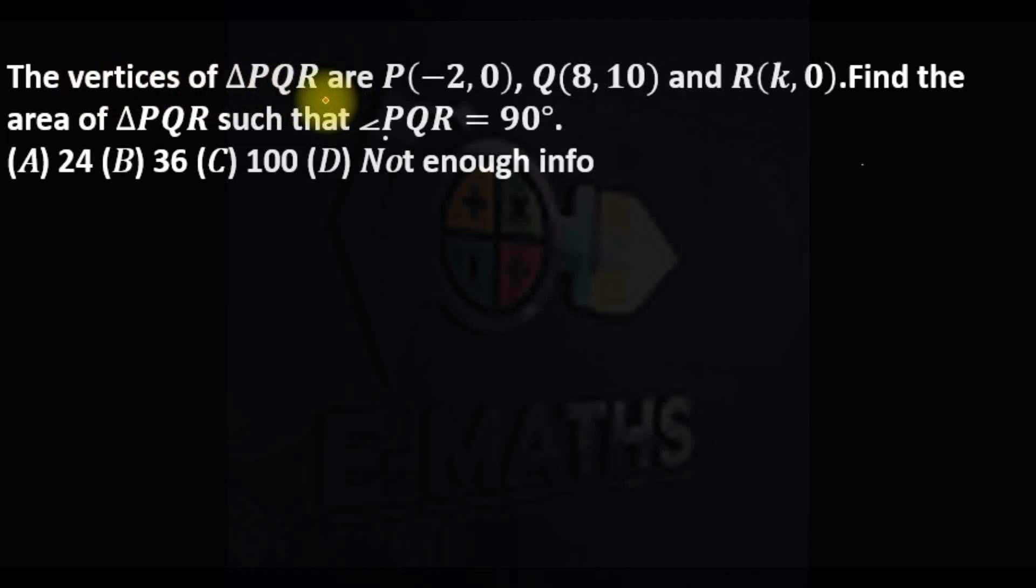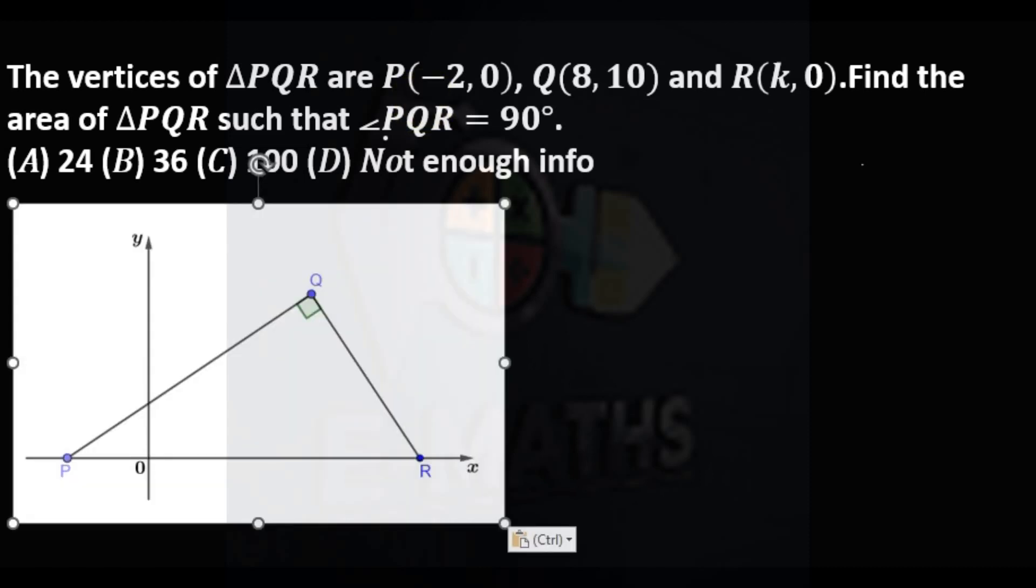The vertices of triangle PQR are P, Q, and R with coordinates given. Find the area of triangle PQR such that angle PQR is 90 degrees. Okay, first I'll have to draw a good diagram. So this is the diagram.